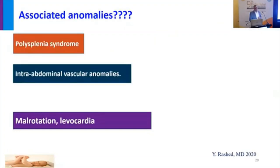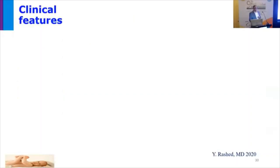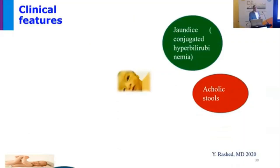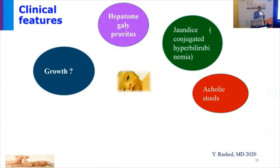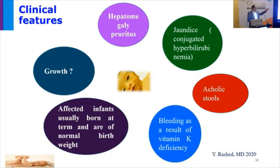Associated anomalies such as polysplenia, intra-abdominal vascular malformation, malrotation, and levocardia are common with the embryonic type, not the postnatal type. Clinically, the patient presents with jaundice and clay-colored stool. Growth is important — patients with biliary atresia usually have normal growth at the start, but later with development of liver fibrosis, cirrhosis, and ascites, growth will be affected. Also, bleeding due to vitamin K deficiency, since cholestasis impairs absorption of fat-soluble vitamins.